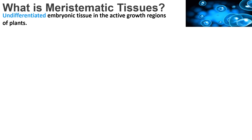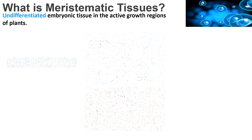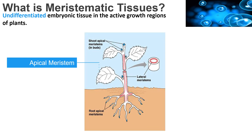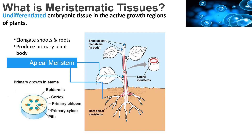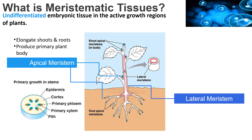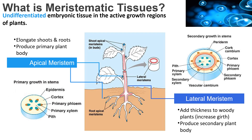Meristematic tissues are undifferentiated embryonic tissue in the active growth regions of plants. Apical meristems are found at the tip of roots and shoots, responsible for primary growth or elongation of the plant body. Lateral meristems are found lining the sides of stems, responsible for secondary growth or increasing the girth of the plant body.